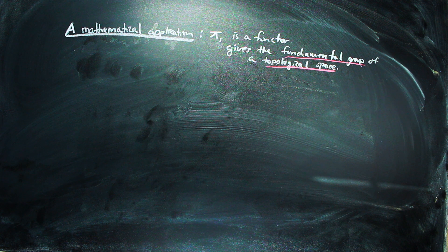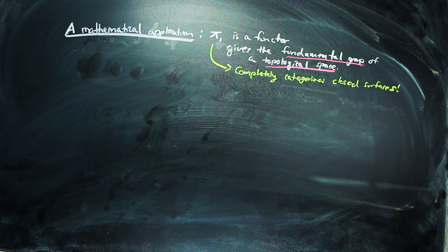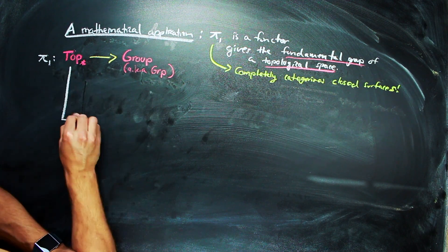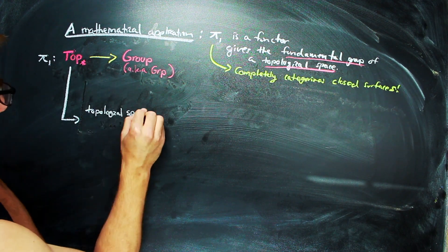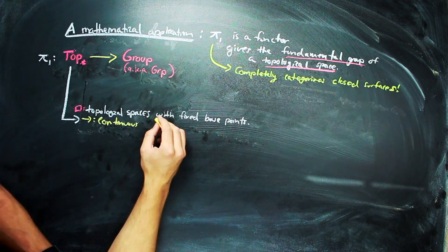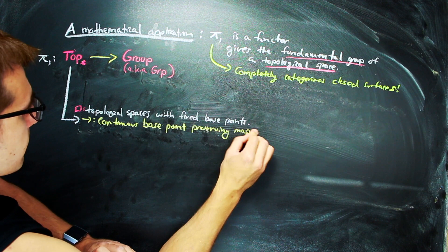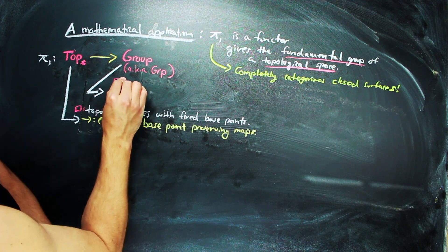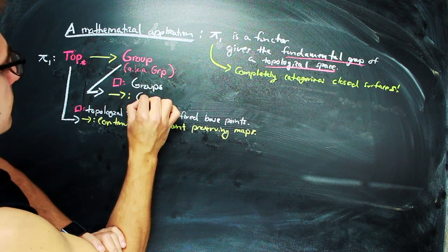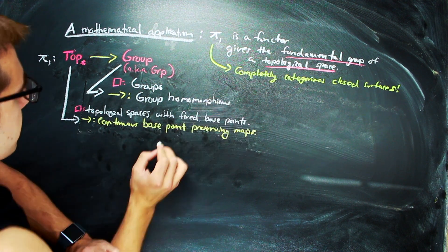So this functor, π₁, is sending objects from Top*, which is the category of topological spaces with fixed base points as objects, and base point preserving continuous maps as morphisms, to the category Group, aka GRP, which has groups as objects, and group homomorphisms as morphisms.